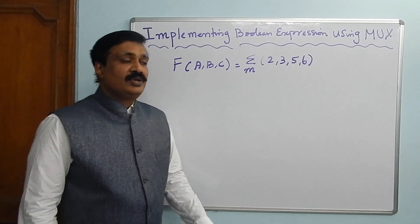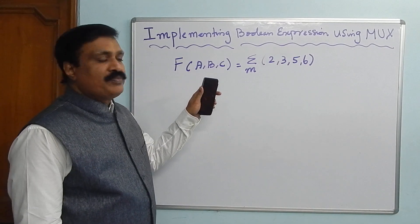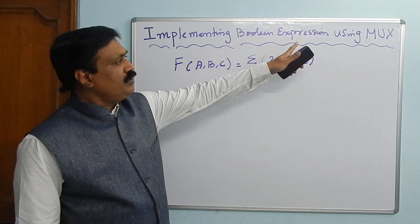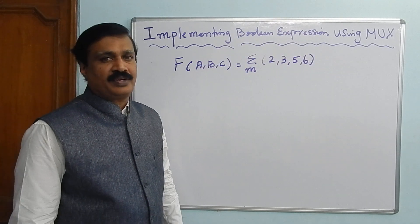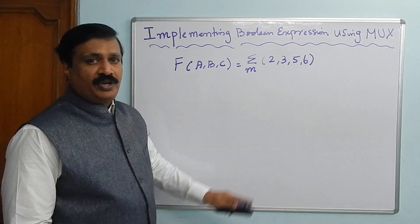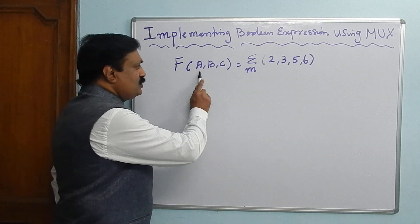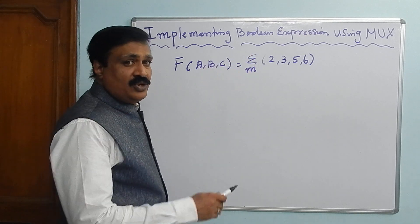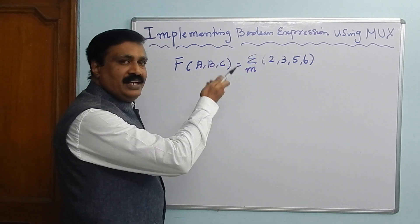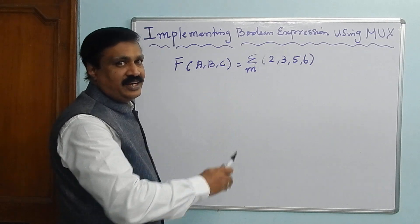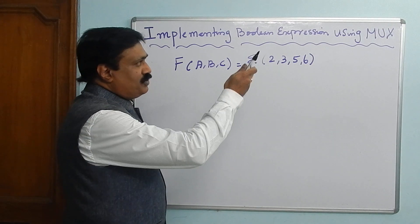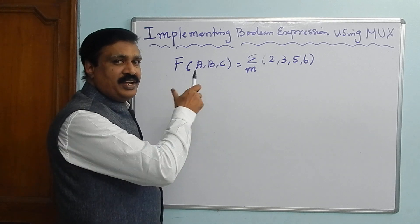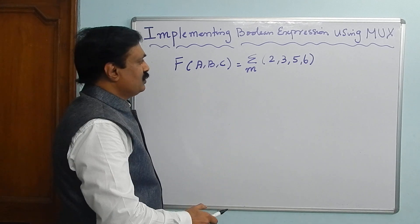Good morning. Today we are going to see how to implement a boolean equation using a multiplexer, or simply MUX. We are going to implement this equation using a multiplexer. Usually we go for an AND gate or OR gate, just like a gate diagram. But after studying multiplexer, we have to know how to implement an equation using a multiplexer.